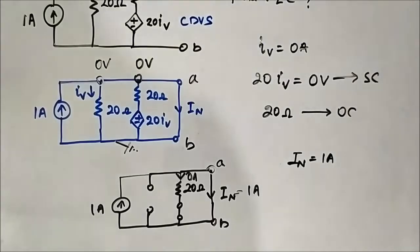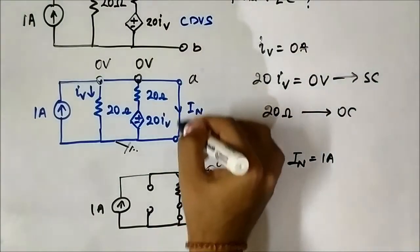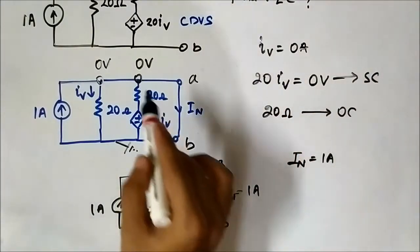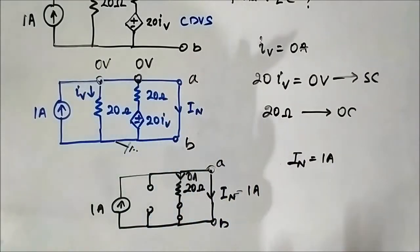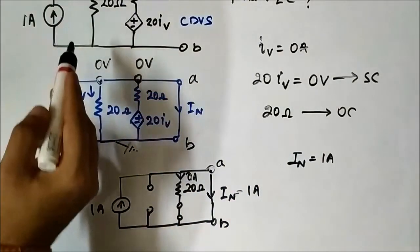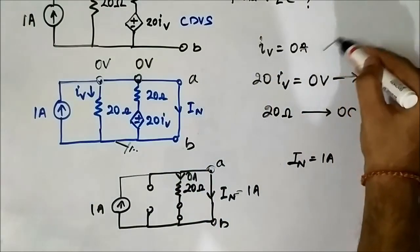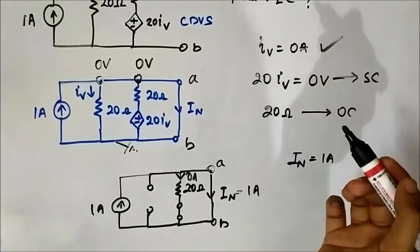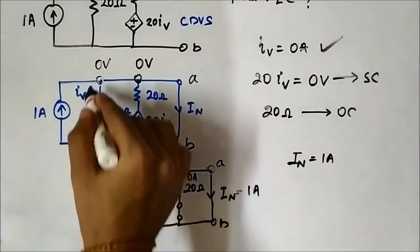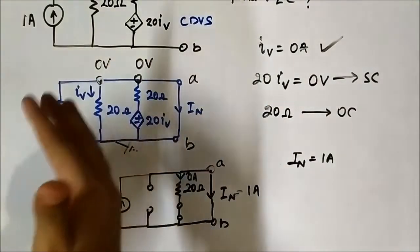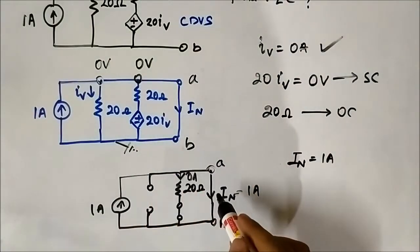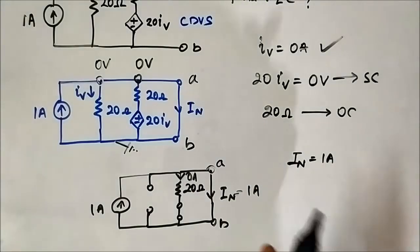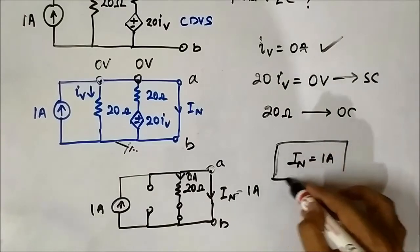It is very important to notice simple things in the circuit. As A and B got short circuited, those node voltages became 0 volts. Because of that, the dependent variable IV became 0. Once IV became 0, everything became 0 — the current dependent voltage source became 0 volts, meaning short circuit, and the current source became 0 meaning open circuit. The circuit modified and all current flowed through the shorted terminal. So IN equals 1 ampere. We have found the Norton current.